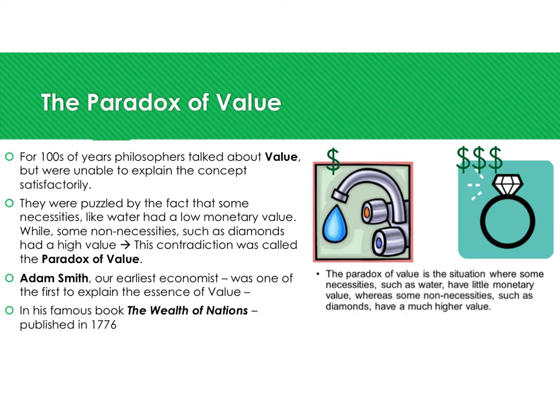This contradiction is known as the paradox of value. Adam Smith, known as the father of economics, was the first to explain this paradox in his famous book The Wealth of Nations, published in 1776.